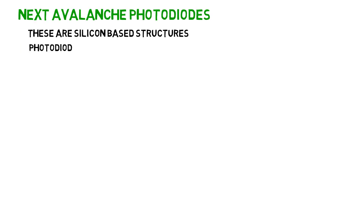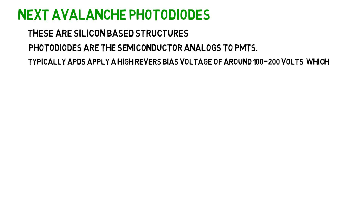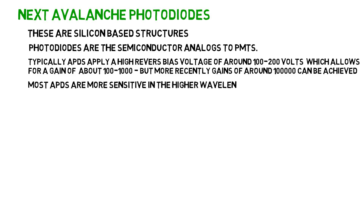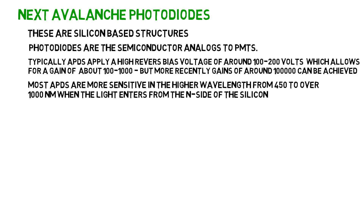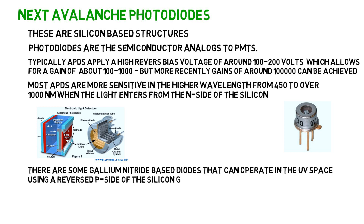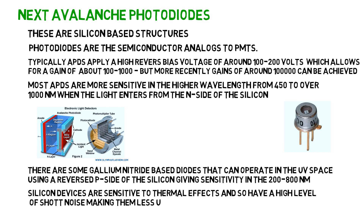Avalanche photodiodes are silicon-based structures and are the semiconductor analogues to PMTs. Typically, APDs apply a high reverse bias voltage of around 100 to 200 volts, which allows for a gain of about 100 to 1,000. But more recently, gains of around 100,000 can be achieved. Most APDs are more sensitive in the higher wavelengths from 450 to over 1,000 nanometers when the light enters from the inside of the silicon. There are some gallium nitride-based diodes that can operate in the UV space, giving sensitivity in the 200 to 800 nanometer range. Silicon devices are sensitive to thermal effects and so they have a high level of shot noise, making them less useful in very low noise applications.